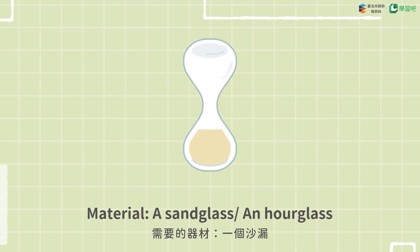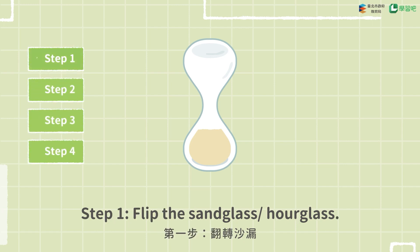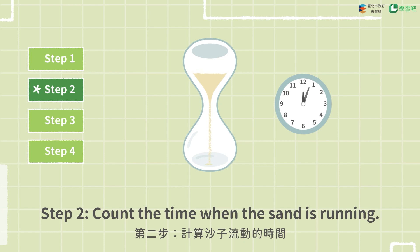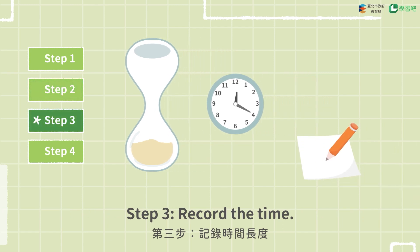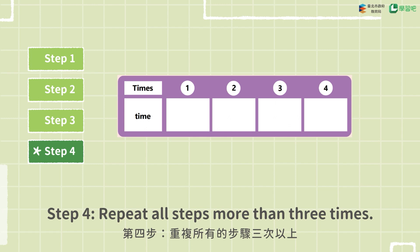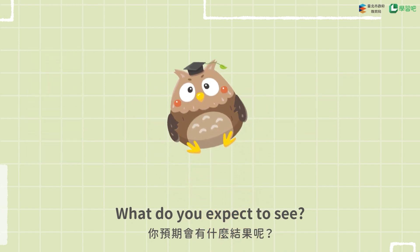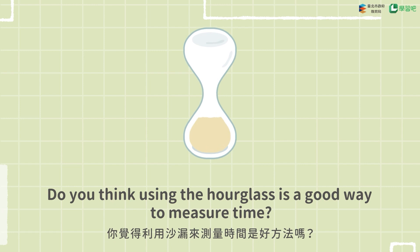Material: a sand glass, an hour glass. Step 1: Flip the sand glass. Step 2: Count the time when the sand is running. Step 3: Record the time. Step 4: Repeat all steps more than three times. What do you expect to see? Do you think using the hour glass is a good way to measure time?